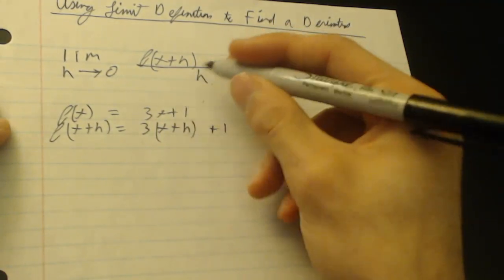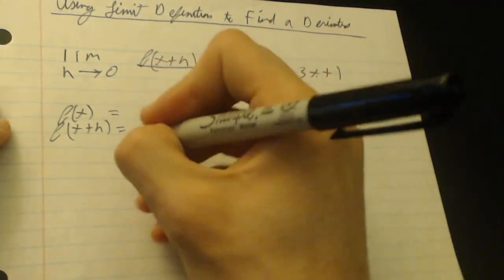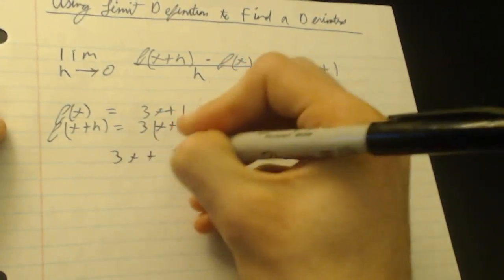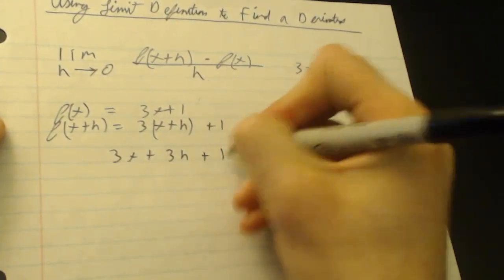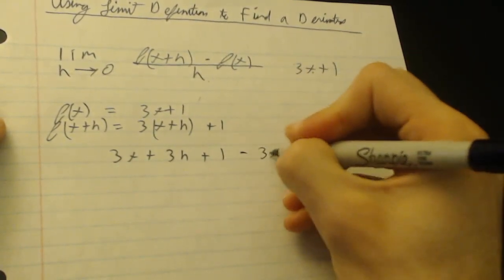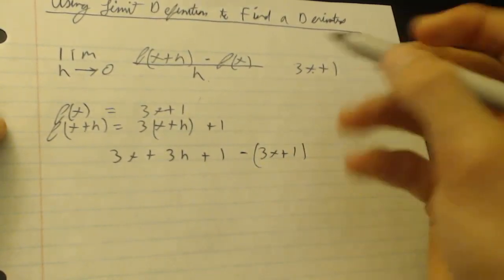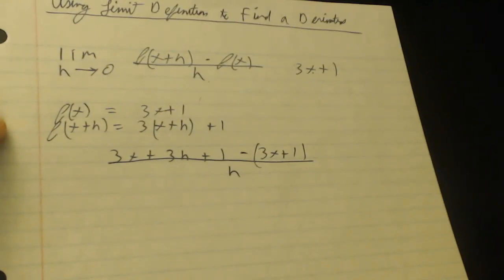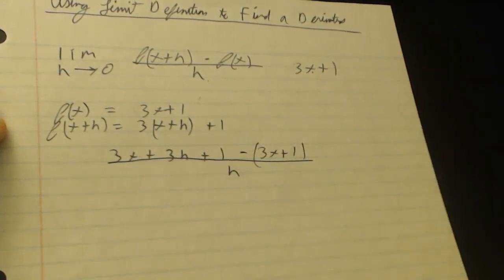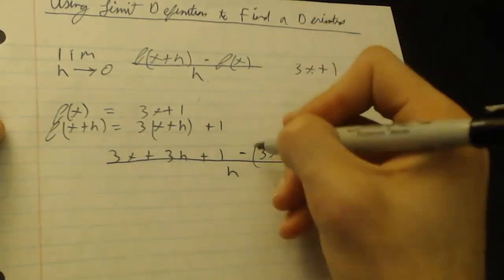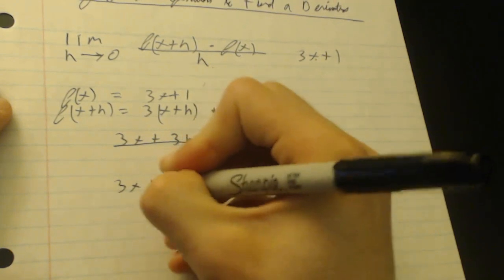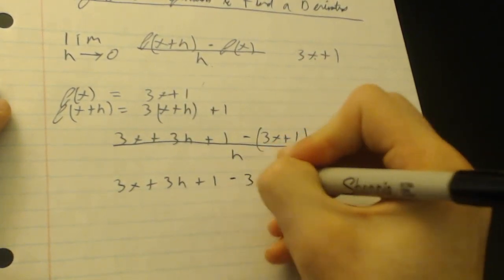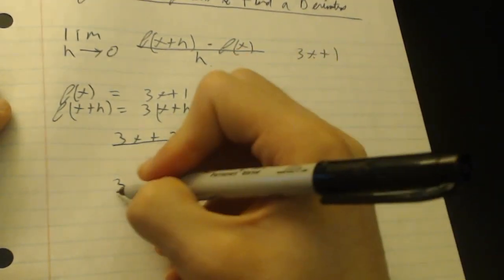Simple enough. Now you just plug these two back into the top equation. I'm going to distribute it on the fly. So we'll have 3x plus 3h plus 1 minus 3x plus 1. Now put it in parentheses because you don't want to forget to distribute the negative there. Don't forget to put it over h. So now once you distribute the negative, you get 3x plus 3h plus 1 minus 3x minus 1 all over h.